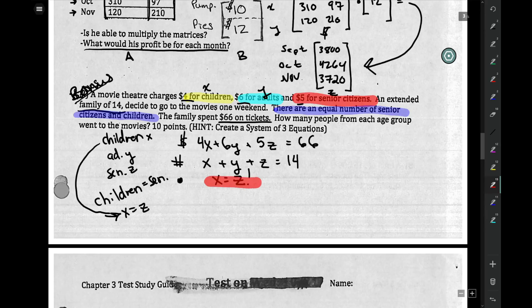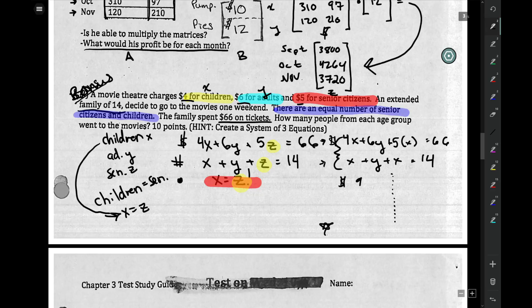Now substitute. If x equals z, anywhere I see z, I can just substitute x. Doing all that then, your money equation is 4x plus 6y plus 5z, but z is really x, equals 66. And your other equation is x plus y plus x equals 14. Now from here, I will leave up to you to solve. But from here, it's just simplifying and solving. To be even more specific, 9x plus 6y equals 66, and 2x plus y equals 14.